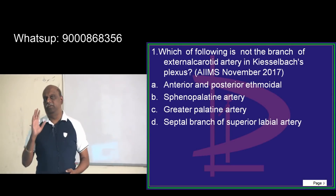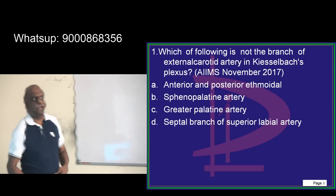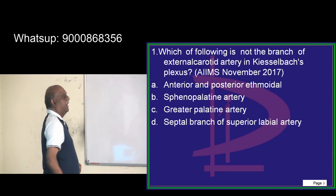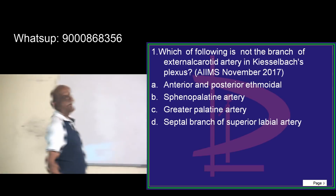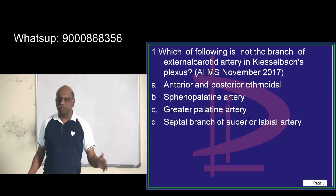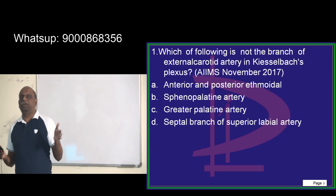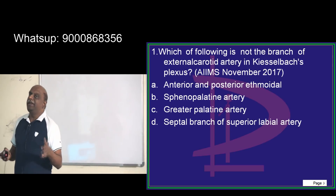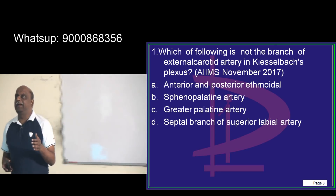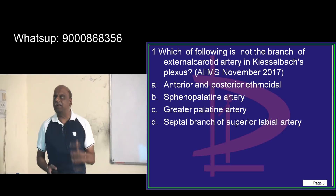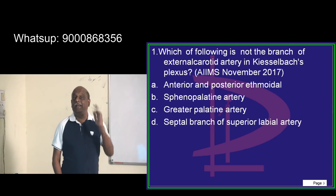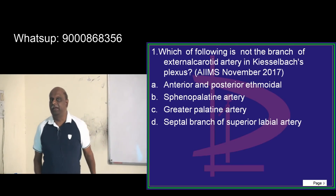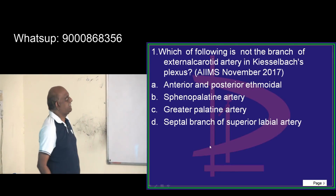Kisselbach's triangle is one of the standard high-yield topics among the 650 topics in ENT — it is the 8th or 9th most high-yielding topic, related to epistaxis.